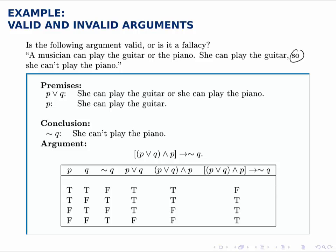The 'so' gives us the hint that the following part is the conclusion. The premises are the first sentence and the first half of the second sentence. We'll break this down into individual components: playing the guitar is P, playing the piano is Q, which makes the first premise P or Q.